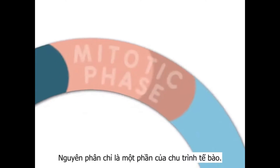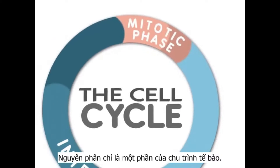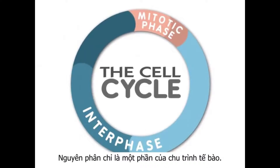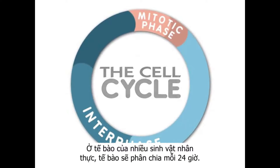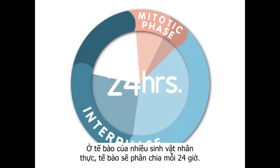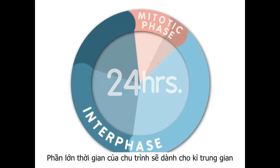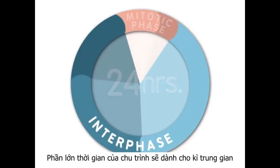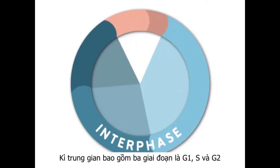Mitosis is only one part of what is called the cell cycle. For many eukaryotic cells, a cell is duplicated every 24 hours. Most of the life of a cell is spent in interphase, which consists of three stages called G1, S, and G2.